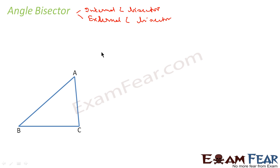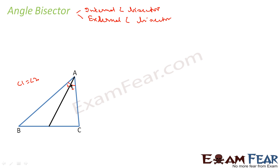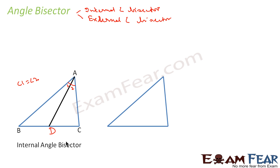In the first case, we'll look at the internal angle bisector. This is triangle ABC, and for angle A, if I want to find the internal angle bisector, I draw a line like this. This angle is 1 and this angle is 2, where angle 1 is equal to angle 2. So you bisect the internal angle, and this line AD is called the internal angle bisector.